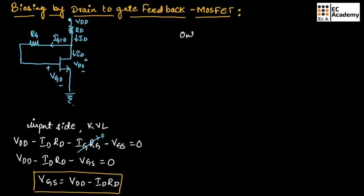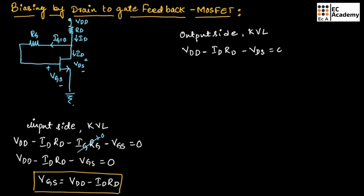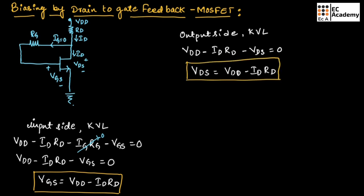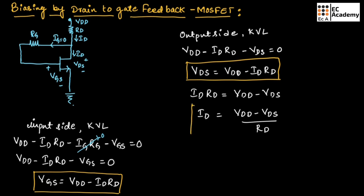Now let us consider the output side and apply KVL. Applying KVL to the output side, we get: VDD minus ID·RD minus VDS equals 0. From this, we find the expression for output voltage: VDS equals VDD minus ID·RD. From this equation, we can write ID·RD equals VDD minus VDS, so the expression for output current is: ID equals (VDD minus VDS) divided by RD.